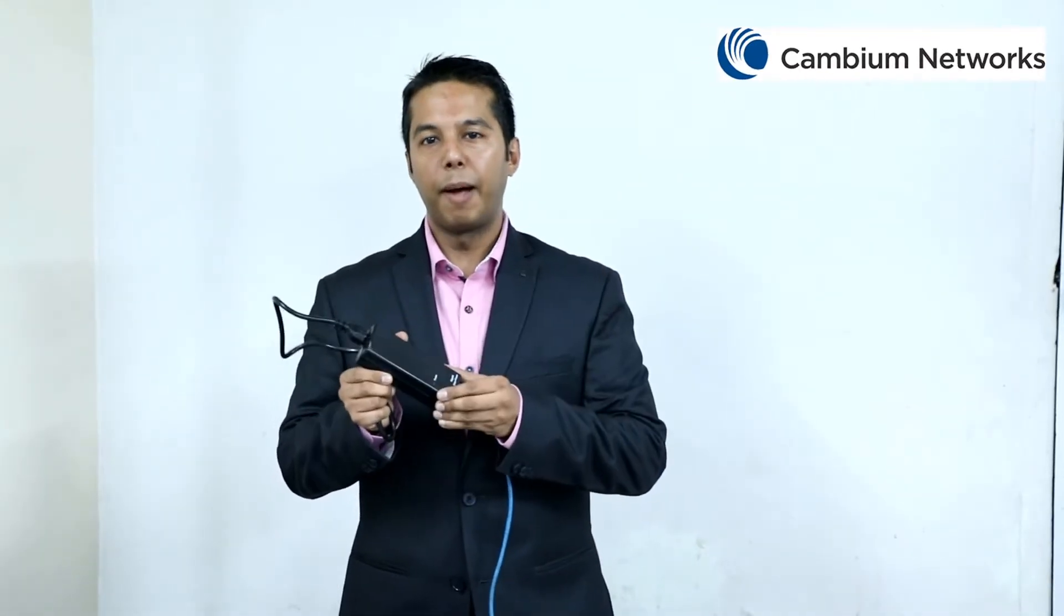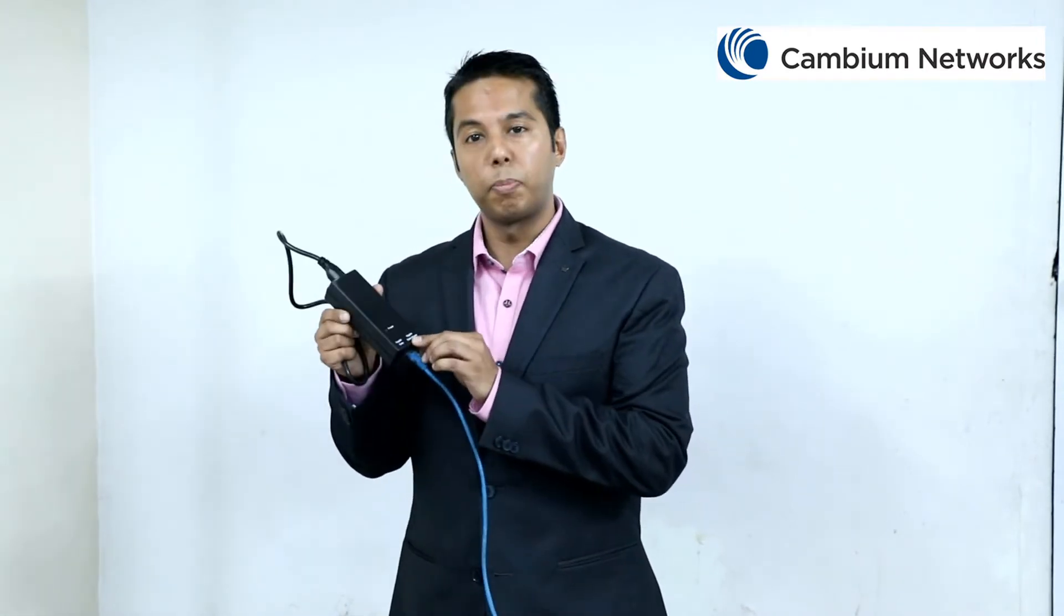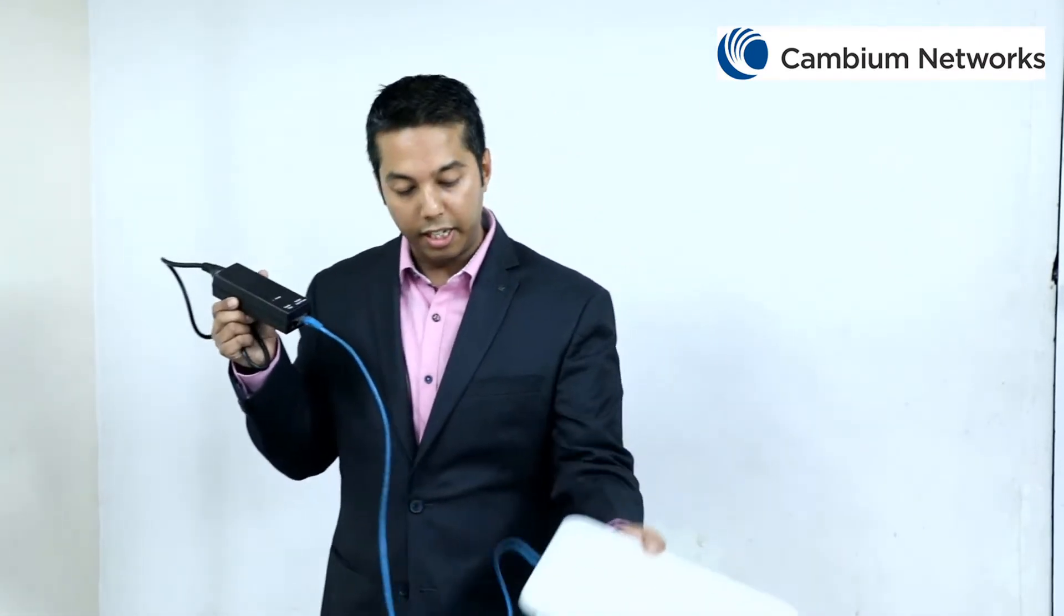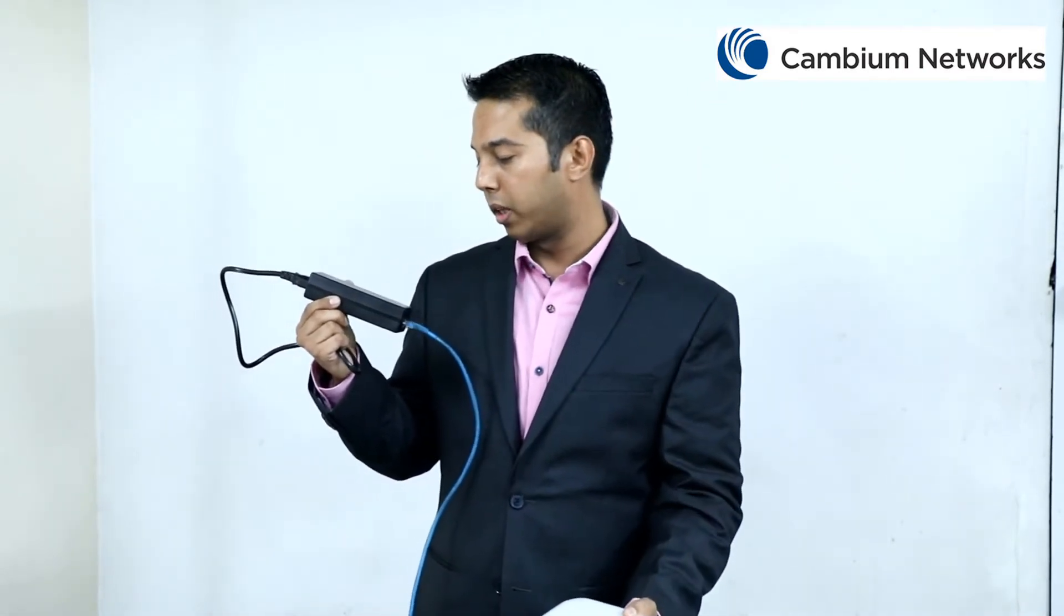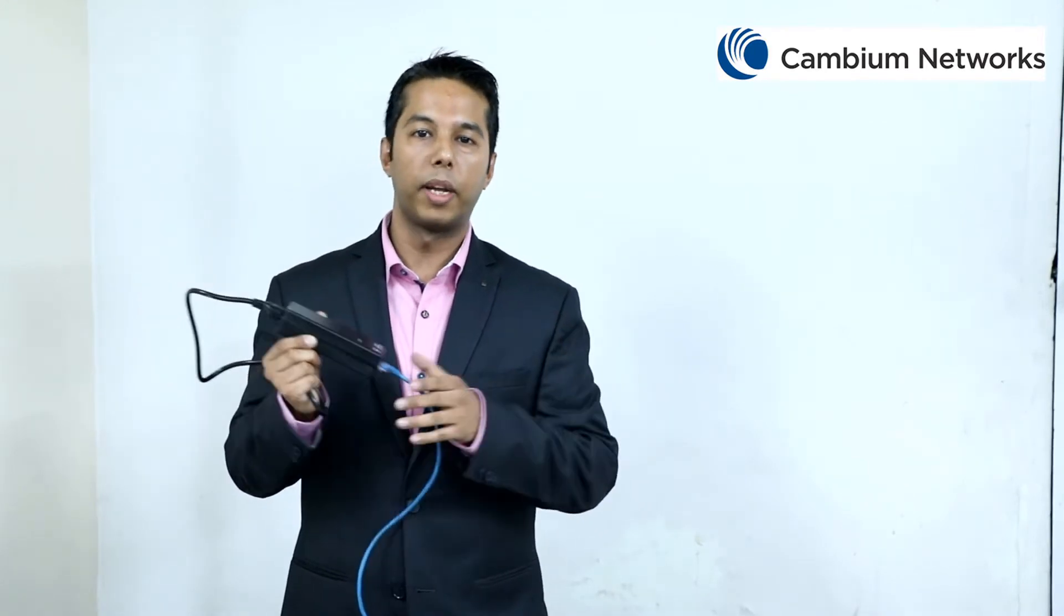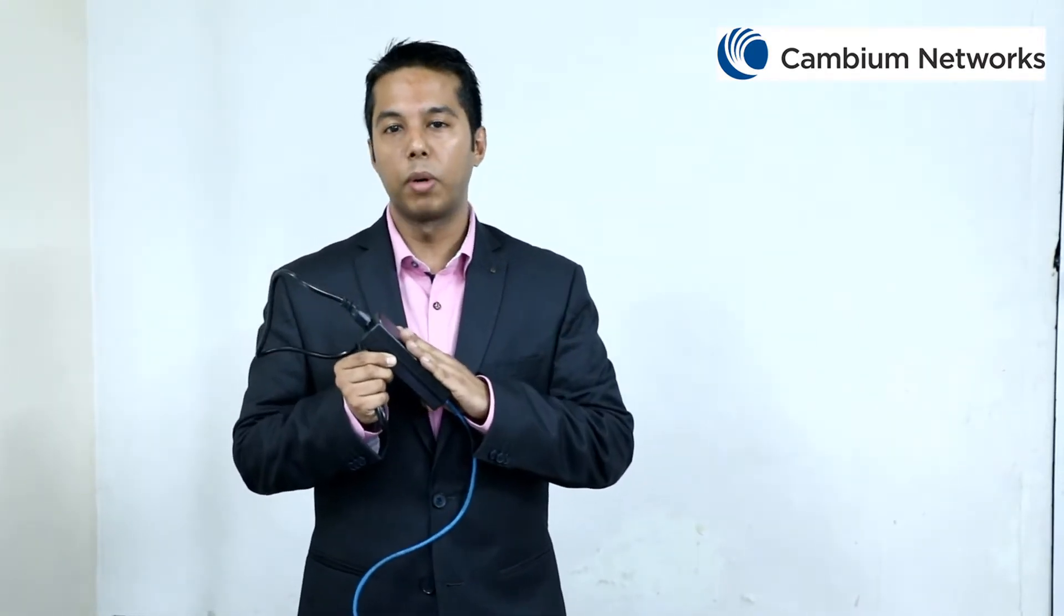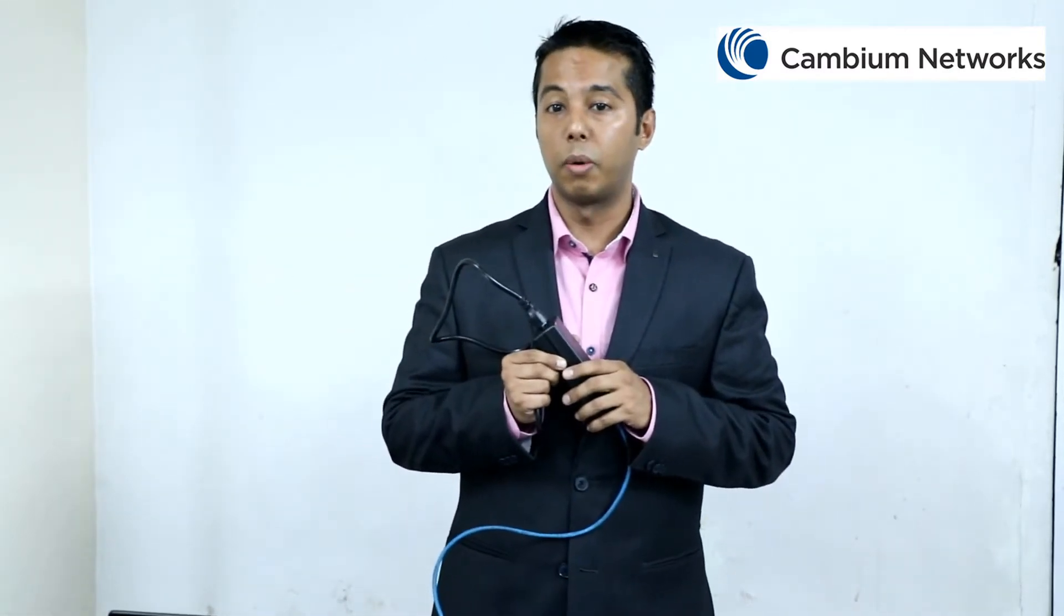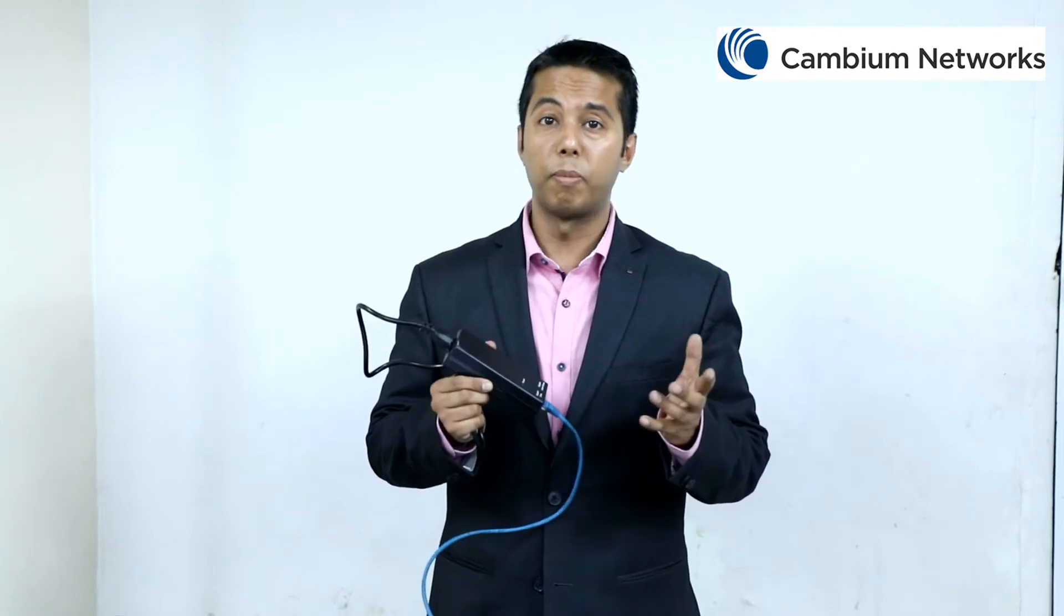This PoE adapter comes with 36 volts or 56 volts specification. The ports are gigabit capable. The ports marked with data plus power should go to the ethernet port 1 of this particular access point. And the ports marked with the gigabit data should actually go to the layer 2 or layer 3 switch. Now, important point, this PoE adapter is not IP67 grade. So please ensure that the power adapter is protected from rain and dust.